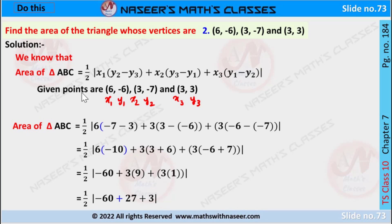We already know that the area of triangle ABC in coordinate geometry is given by 1/2 times the modulus of [x₁(y₂ - y₃) + x₂(y₃ - y₁) + x₃(y₁ - y₂)].